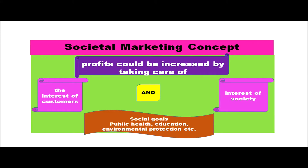The next one is the societal marketing concept, where profits could be increased by taking care of the interest of the customers as well as the interest of the society. This is a combination of marketing and concern for society — satisfying customers while also doing something that benefits society. For example, producing environmentally friendly goods and helping society by building hospitals, schools, maintaining parks, and supplying good quality products. Social goals like public health, education, and environmental protection come under taking the interest of the society.